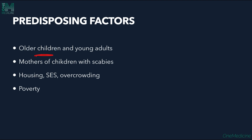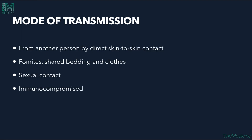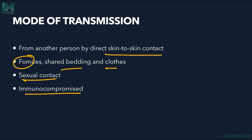Predisposing factors include older children and young adults being mostly affected. Mothers of children with scabies are affected due to close contact. Poor housing, low socioeconomic status, and overcrowding also contribute. Mode of transmission is skin-to-skin contact, fomites such as shared bedding or clothes, sexual contact, and immunocompromised individuals with poor immunity are also prone to developing scabies infection.